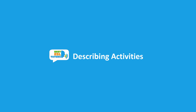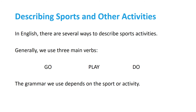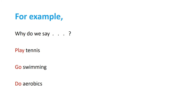This presentation is about describing sports activities in English. In English there are several ways to describe sports activities. Generally we use three main verbs: go, play, and do. The grammar we use depends on the sport or activity.